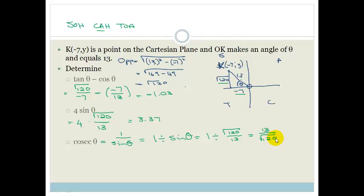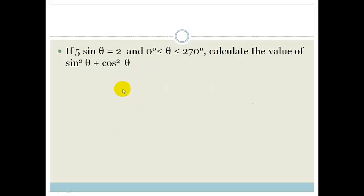Let's look at another example. In this question, they've got 5 sin θ is equal to 2, and θ is between 0 and 270. And it says calculate the value of sin²θ + cos²θ. Now, they love asking questions like this. It's actually a very traditional question for the examiners to ask. First of all, they tell you that this θ is between 0 and 270. So in other words, it's in the first quadrant, the second quadrant, or the third quadrant.